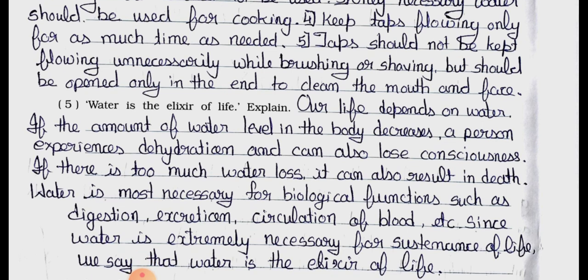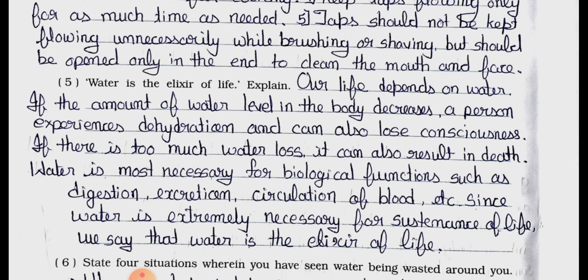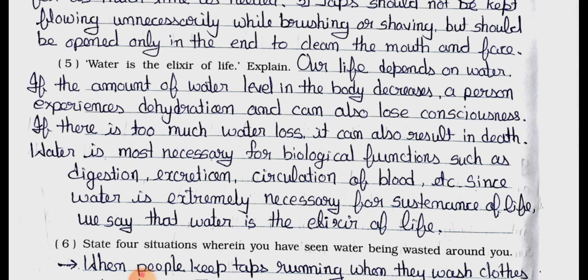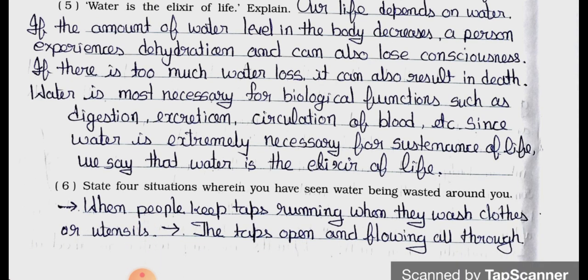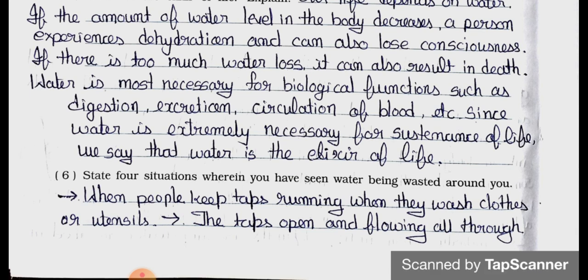Question 5: Water is the auxiliary elixir of life — explain. Answer: Our life depends on water. If the water level in the body decreases, a person experiences dehydration and can lose consciousness. If there is too much water loss, it can also result in death. Water is most necessary for biological functions such as digestion, excretion, circulation of blood, etc. Since water is extremely necessary for the sustentation of life, we say that water is the elixir of life.